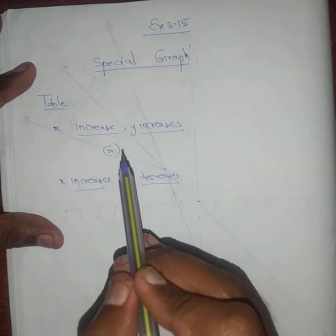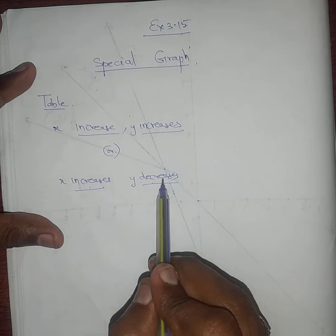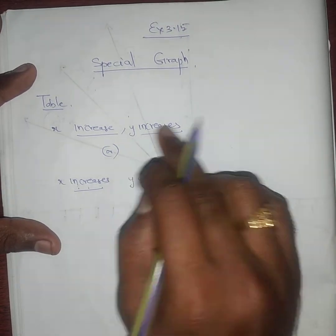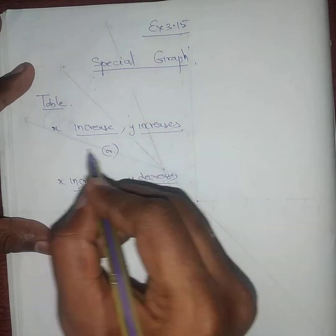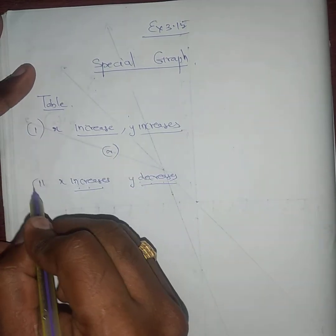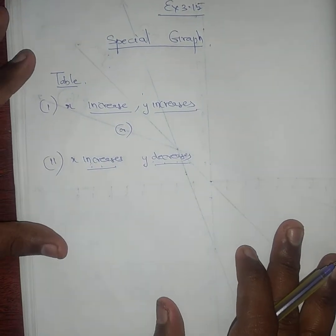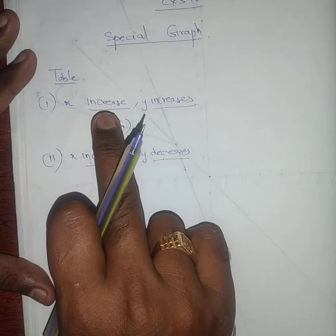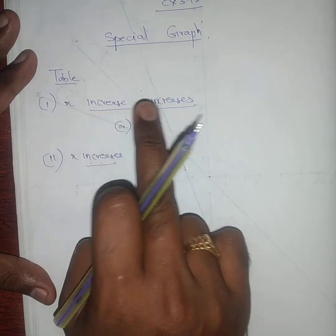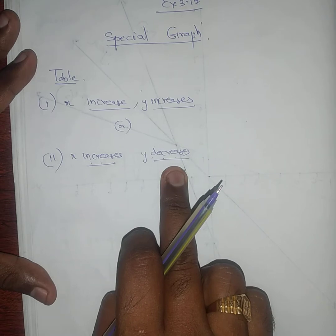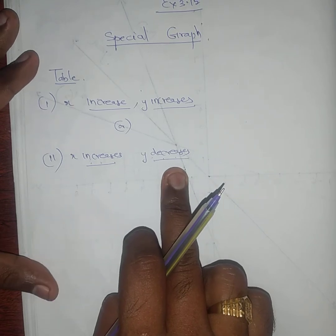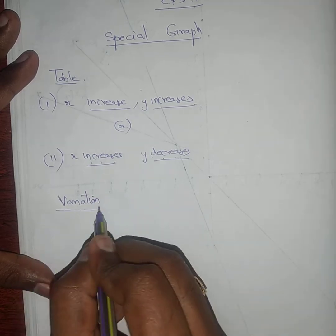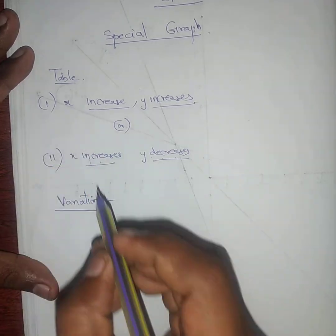Sometimes x decreases and y increases — you can describe it either way. If x increases, y increases — this is the first subdivision. The second subdivision: we have two subdivisions in the graph table. In the table, x increases y increases, or x increases y decreases. After seeing the table we need to make a variation.